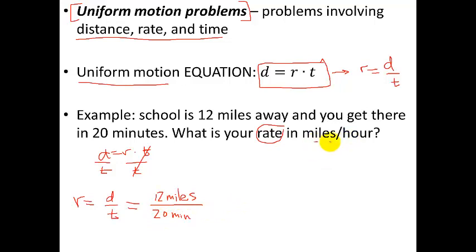But I wanted my answer not in miles per minute, but in miles per hour, so I need to convert minutes to hours. So we can do this using what's called a conversion factor. 60 minutes is 1 hour. Notice I put 60 minutes in the numerator because I need to cancel out with these minutes that are in the denominator.